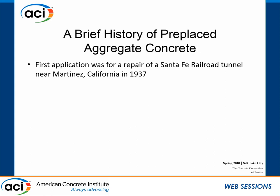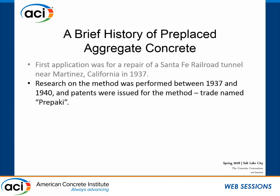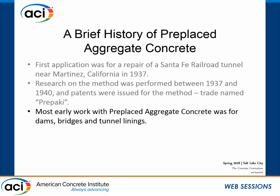A little history of pre-placed aggregate concrete: the first application was in 1937 — about 80 years ago — in a Santa Fe Railroad tunnel near Martinez, California. Interestingly, after that first application, they started doing research on the method. Now we tend to research the living daylights out of something before we use it, but they installed it, it worked pretty well, they researched it, and in 1940 they got a patent. The first method had the trade name 'Pre-Packy.'